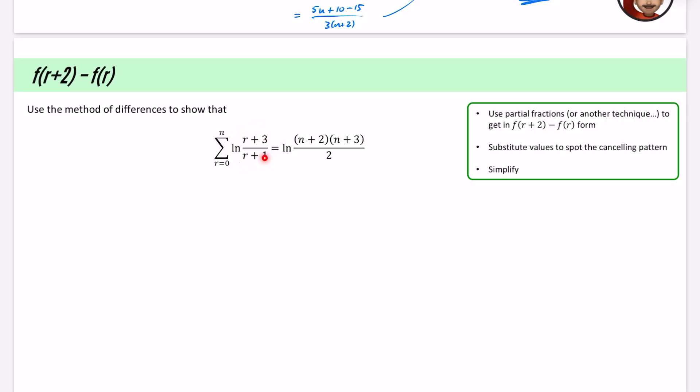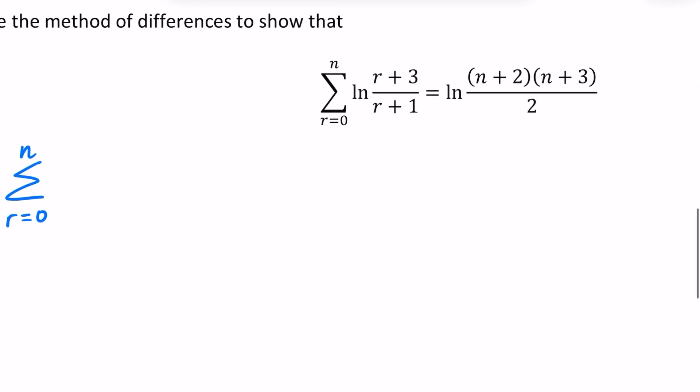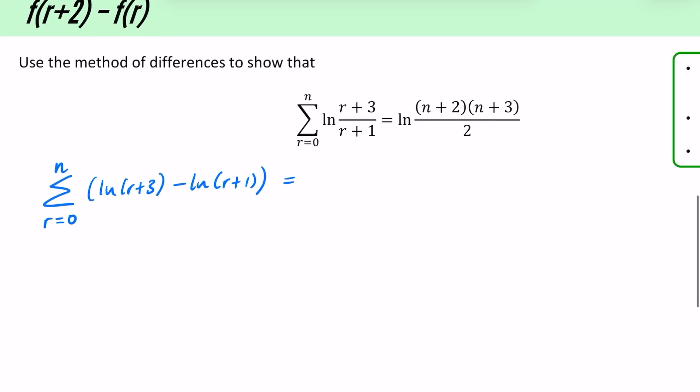You can tell what this other technique is going to be to split this thing up. We have a natural log with two things as a fraction like this. We know that can be rewritten as a subtraction. So this is going from r equals 0 to N. This is the same thing as the ln(r+3) minus the ln(r+1). So now I've separated this logarithm into two separate parts, I can just go straight in with the substitution, beginning with my r equals 0.